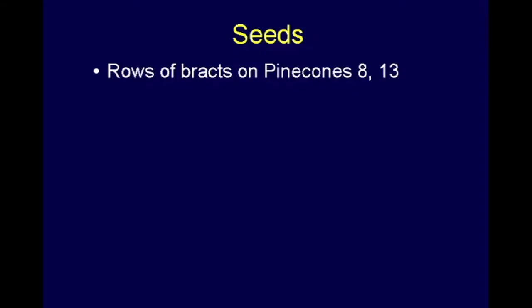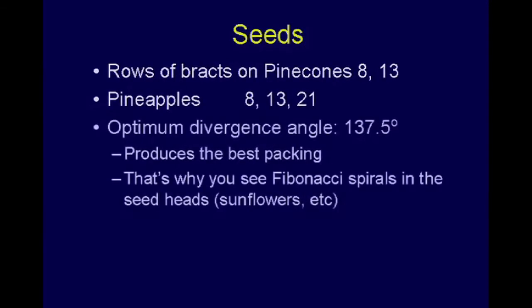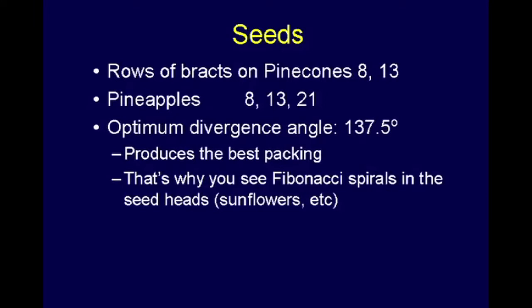So about seeds. The rows of bracts on pinecones, it's 8 or 13. There's two rows. On pineapples, there's three rows. It's 8, 13, and 21. And it turns out there's an optimum divergence angle of 137.5, which is, in effect, a fraction of the 360 that's a Fibonacci number. It produces the best packing and that's why you always see Fibonacci spirals on sunflowers. If you look at sunflowers, you've got two divergent spirals. They're both Fibonacci numbers.